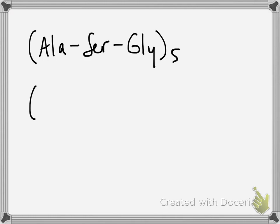So the first comparison that we're going to look at is the peptide that's made up of alanine, serine, and glycine repeated five times, compared to asparagine, serine, and histidine repeated five times. And the pH that we're asked to consider is pH 6.